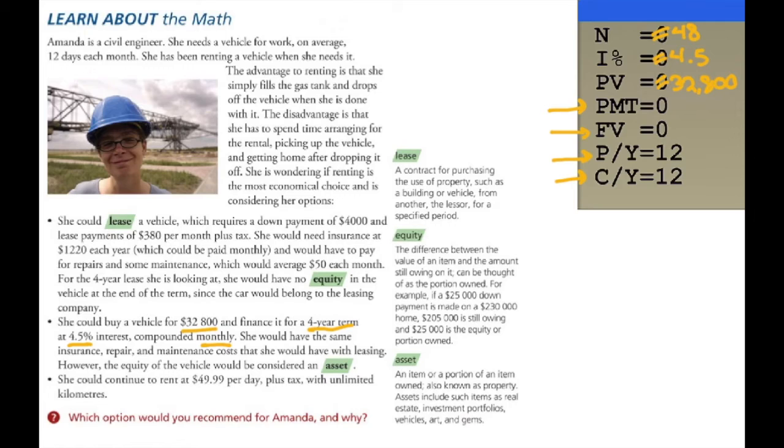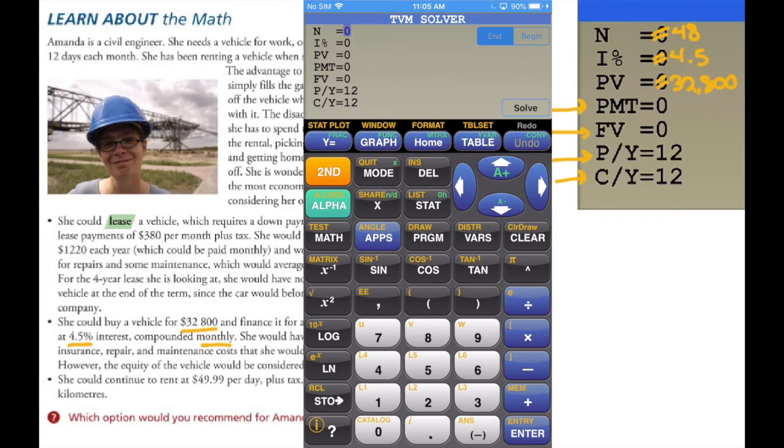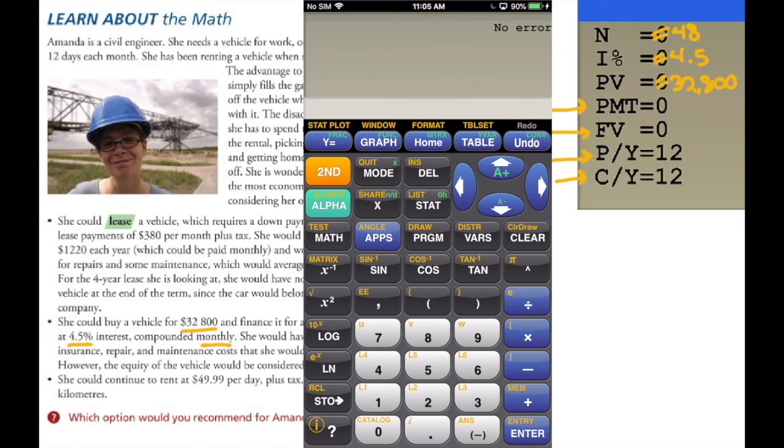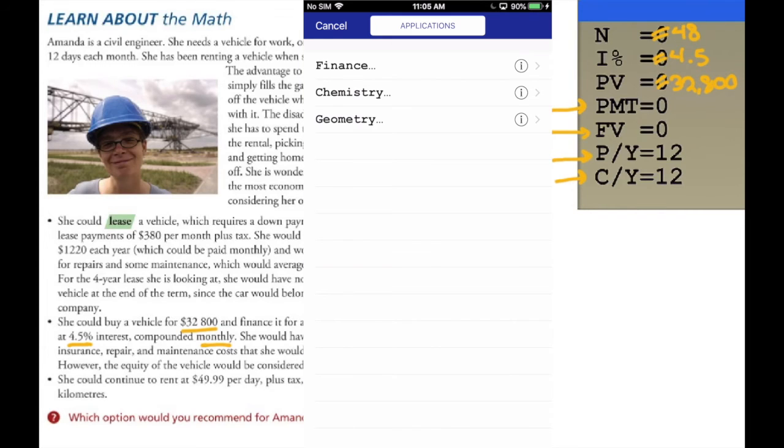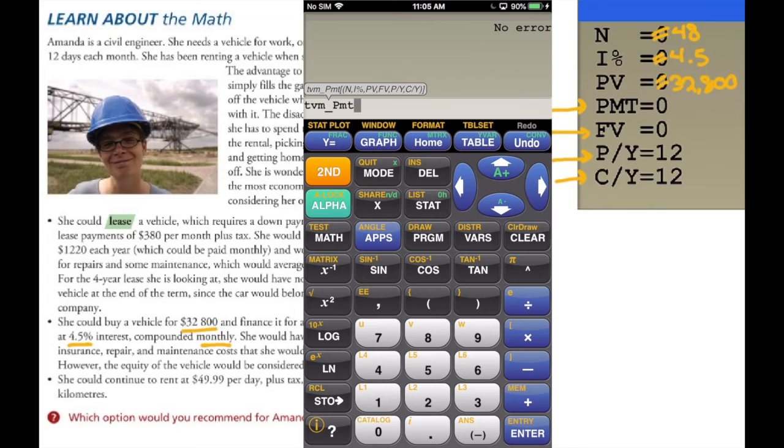We will flip over to the graphing calculator. Input our data, apps, finance, TVM solver. 48 for N, 4.5, 32,800. Quit out of this, second mode. Go back into the apps with finance. We are looking for the payment amount, so TVM PMT. Calculate that out, and her monthly payment on this car would be $747.95.